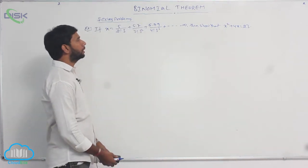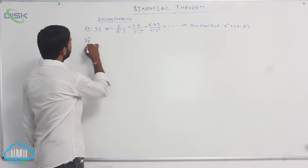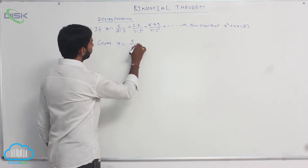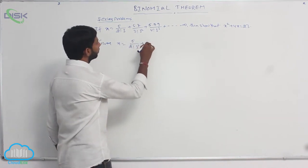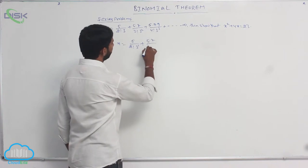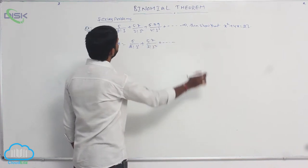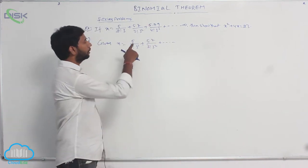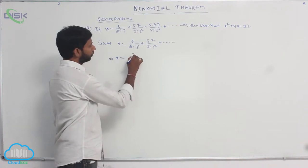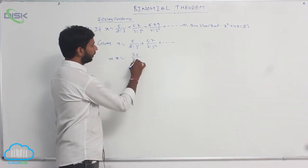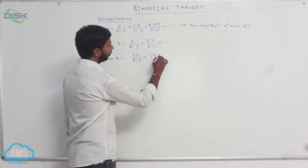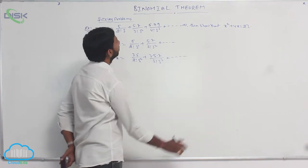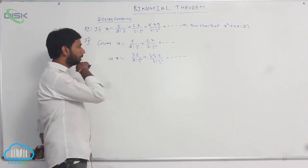Given series: x is equal to 5 by 2 factorial into 3 to the power 1, plus 5 into 7 by 3 factorial into 3 squared, and so on. Here in the numerator, the common difference is 2. Multiply and divide by 3: x equals 3 into 5 by 2 factorial into 3 squared, plus 3 into 5 into 7 by 3 factorial into 3 cubed, and so on.